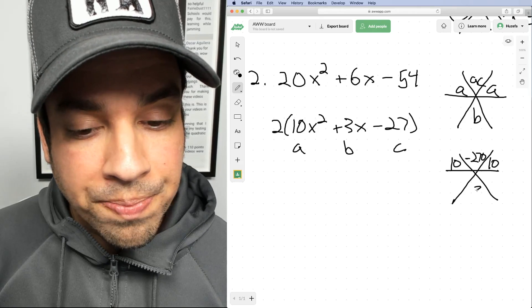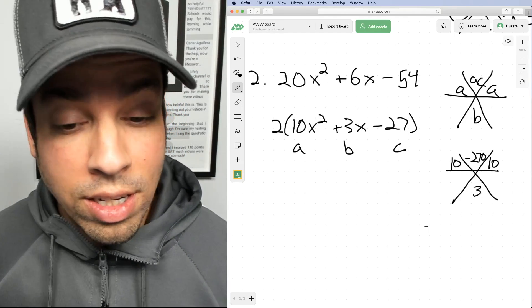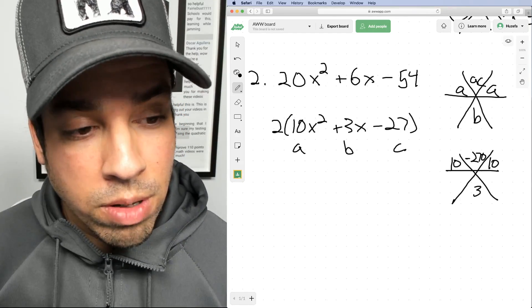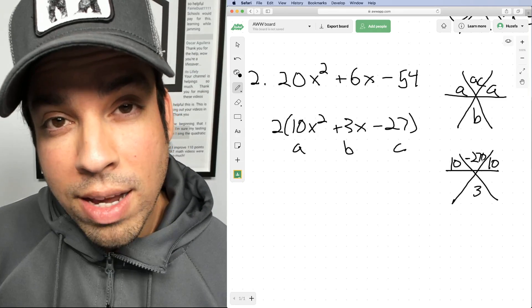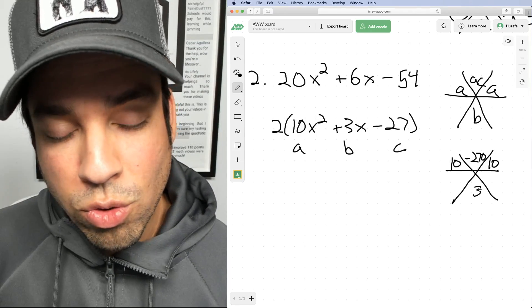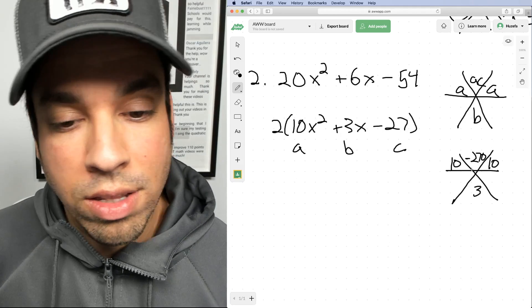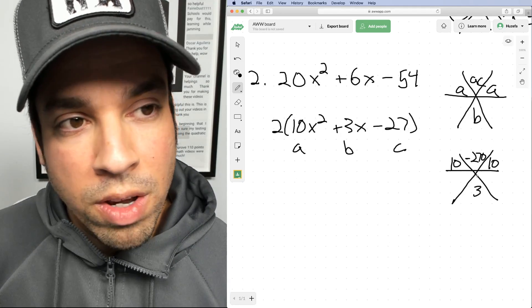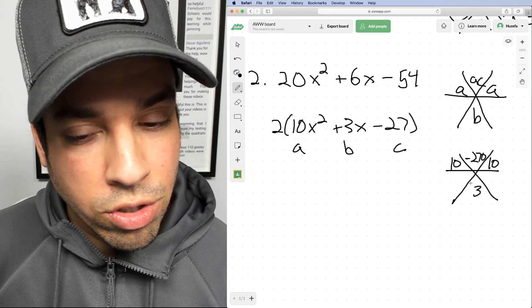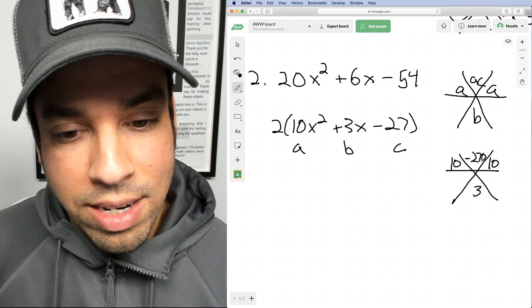So then the question is, now this is a little bit bigger, a little bit of a tougher number, but what two numbers multiply to negative 270 and add to positive three? So let's think about that. My first guess is I'm thinking nine and 30. No, they're not three apart. So we're going to have to go closer, maybe 10 and 27.